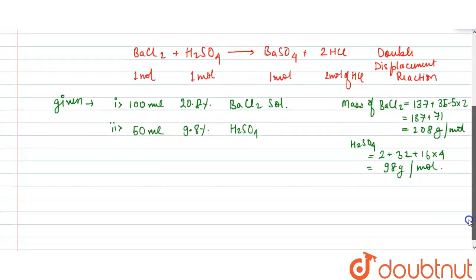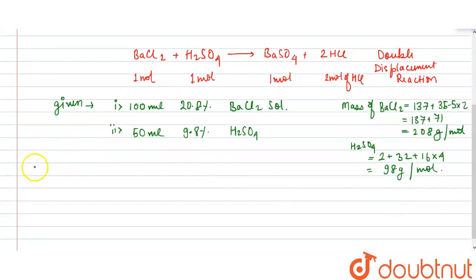Hence, if we see the number of moles to calculate number of moles of each present, we can have this solution. 100 ml, 20.8%, these percents are given as mass percents. Hence, 20.8 grams is present in 100 ml.